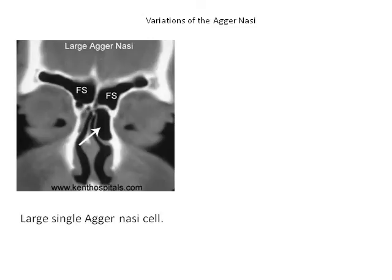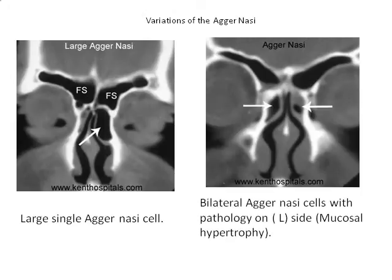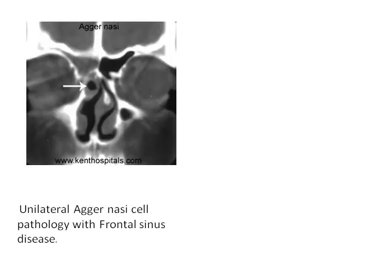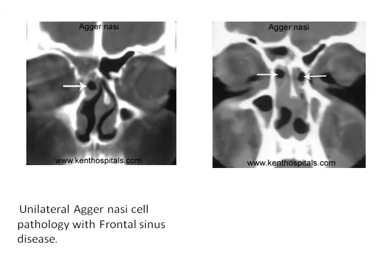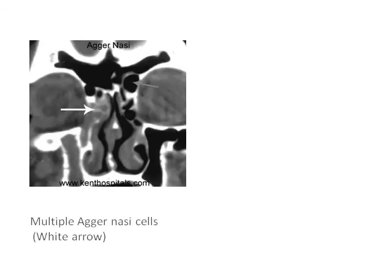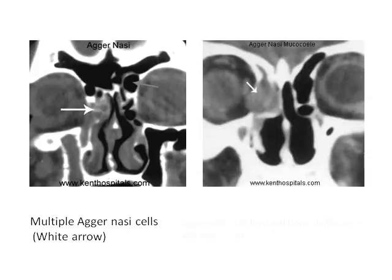Variations of the agar nasi: this shows a single large agar nasi cell; bilateral agar nasi cells with mucosal hypertrophy pathology on the left side; unilateral agar nasi cell pathology with right-sided frontal sinus disease; bilateral agar nasi cells pathology; multiple agar nasi cells; and agar nasi with lacrimal bone dehiscence and mucosal involvement.